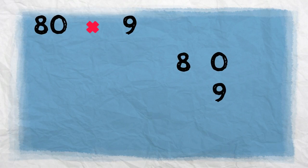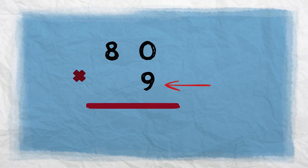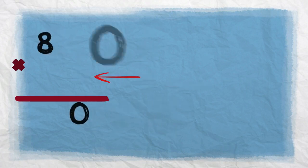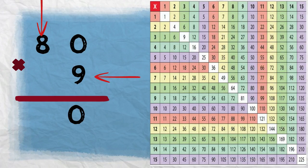One last example: 80 times 9. We stack up the numbers with ones places in one column and tens places in one column, then draw the line and put the multiplication sign on the left. For the first step, 9 times 0 — we know that any number multiplied by 0 equals 0, so 9 times 0 equals 0. For the second step we multiply 9 by the tens digit, which is 8. If I don't remember I can look at my multiplication table — 9 times 8 is 72. The final answer is 720.